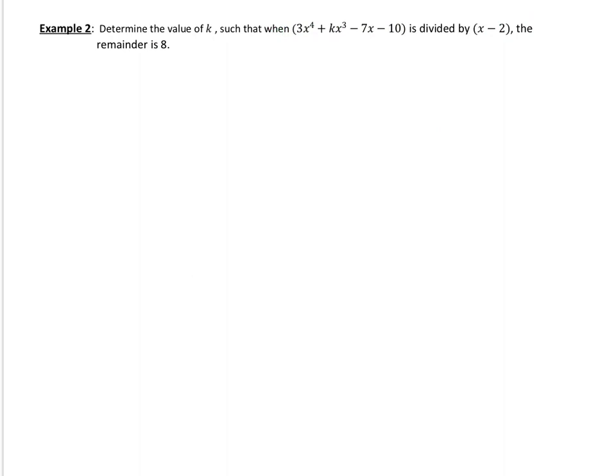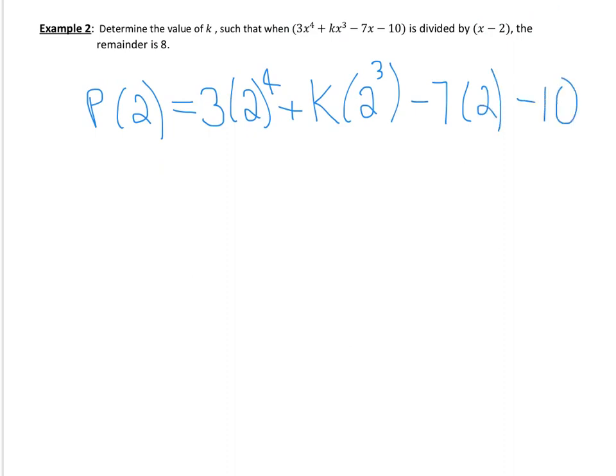We would obviously, if we were finding the remainder here, we would be taking this k value, which is positive 2, and we would be substituting it in for all of x. So let's start by doing that. So we're going to look at P at 2, and that would equal 3 times 2 to the 4 plus k times 2 to the 3 minus 7 times 2 minus 10.